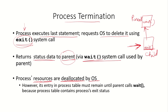However, the process's entry in the process table — a data structure maintained by the OS — will remain until the parent calls wait, because the process table contains the process's exit status. If the parent has called wait and the status has been returned, then its entry in the process table will be deleted. If the parent has not called wait, the entry will remain.